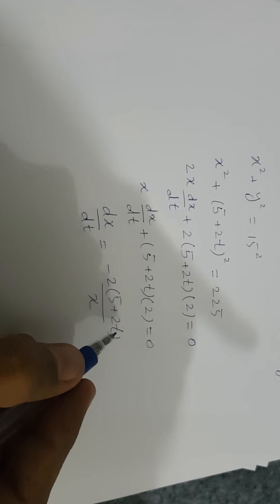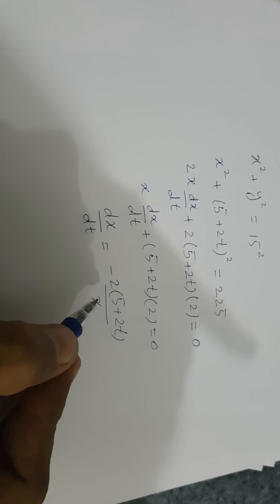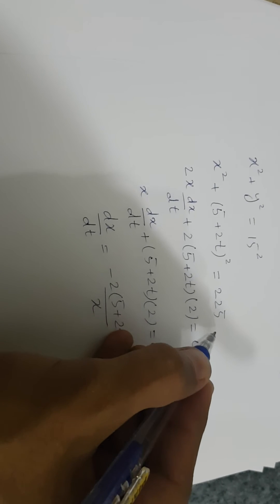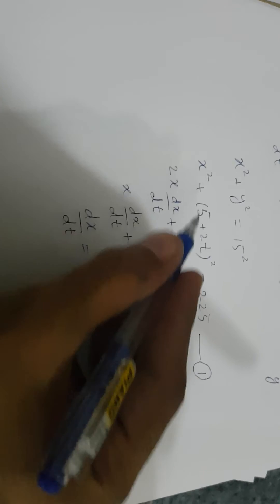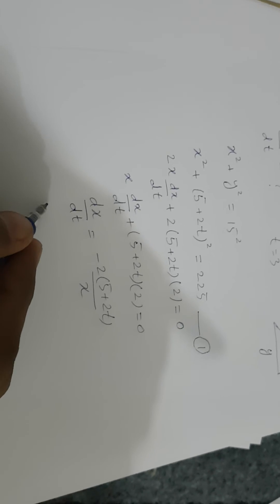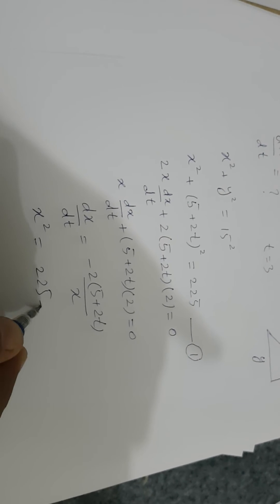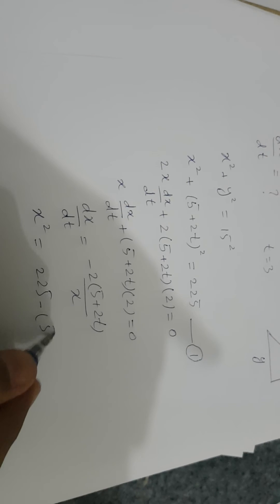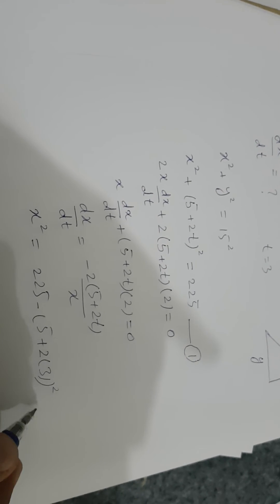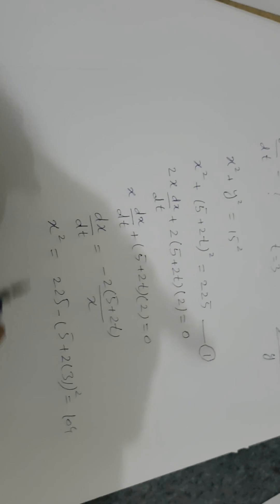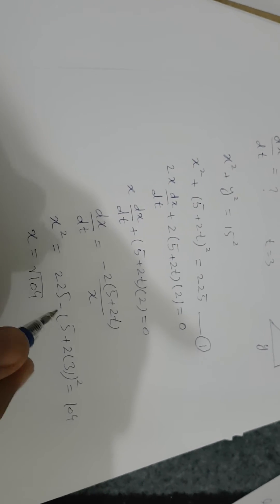From here, dx/dt = -2(5 + 2t)/x. Now we know that t is 3, but x is also unknown. We will find x using equation 1. From here, x² = 225 - (5 + 2(3))² = 104, so x = √104.